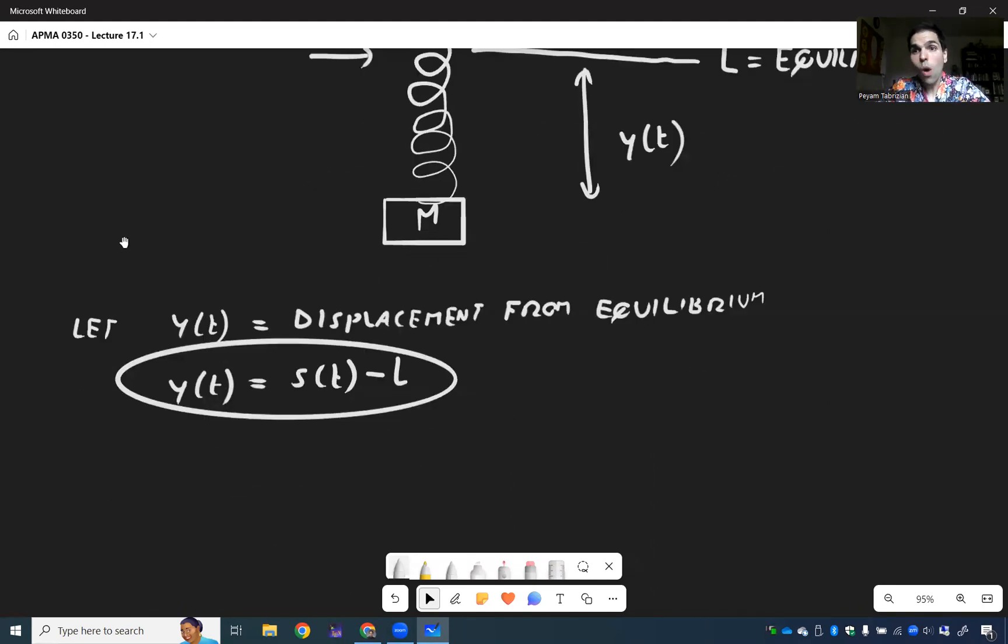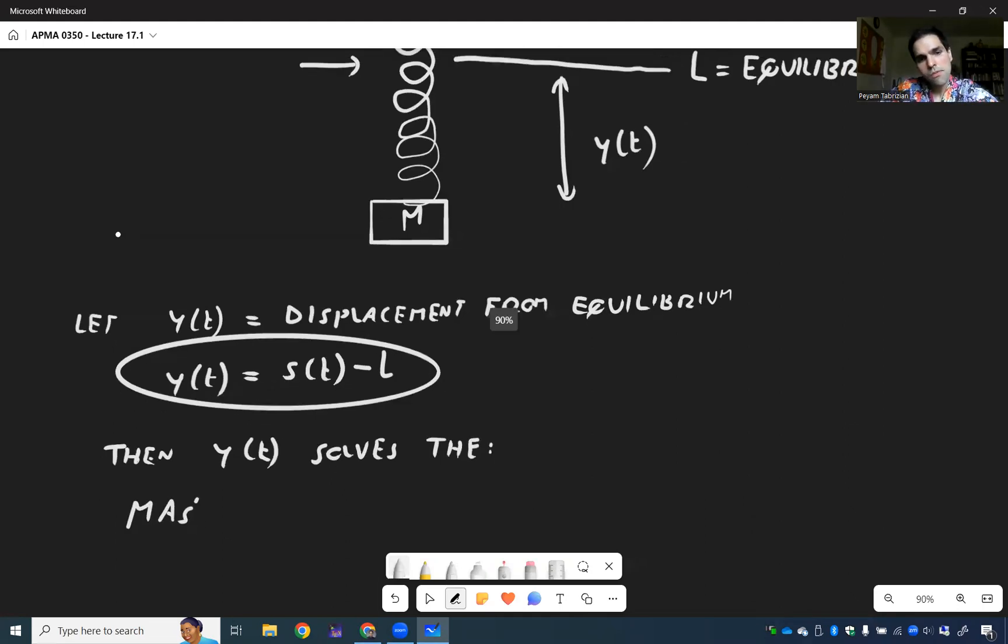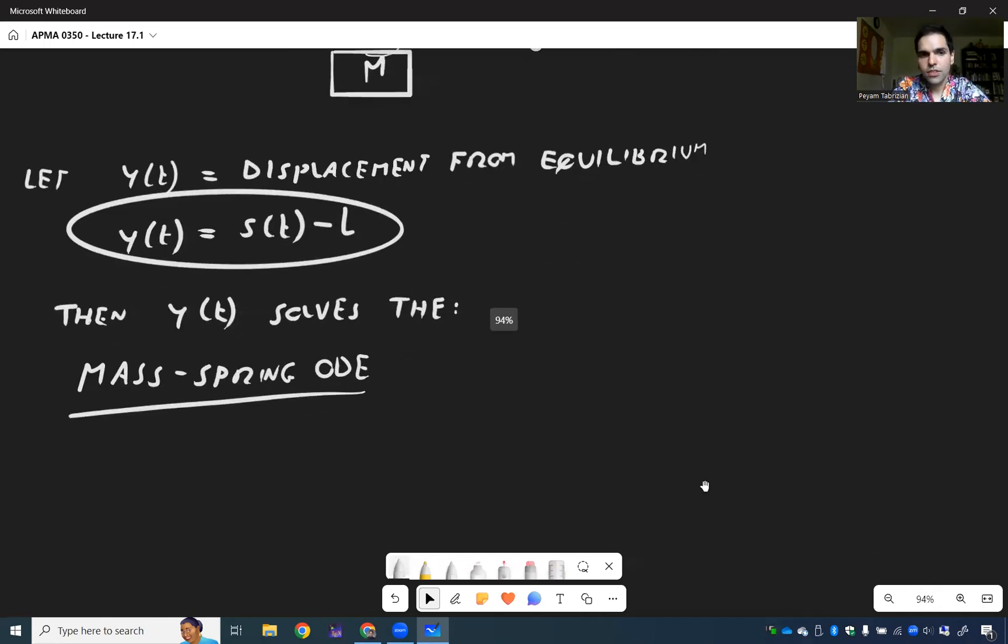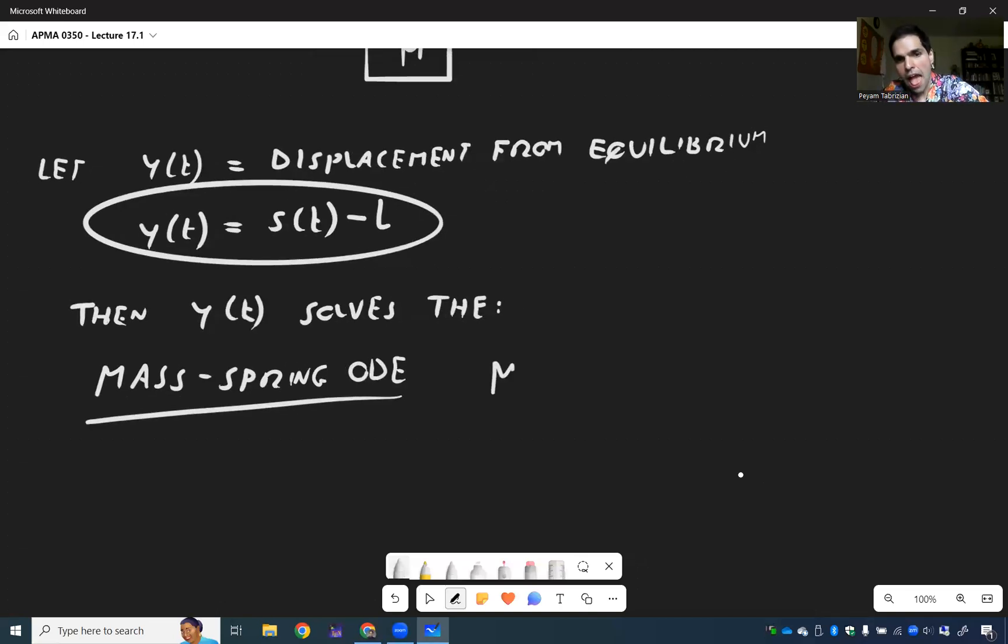Then it turns out Y solves the following ODE. Then Y of T solves the what's called mass-spring equation, mass-spring ODE. And I will write it down. It's a bit gibberish, but I will explain all the terms. So the mass-spring ODE is simply M Y double prime plus gamma Y prime plus K Y equals F of T.